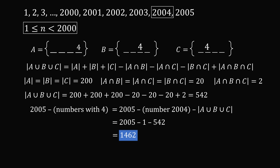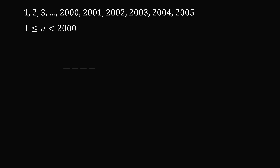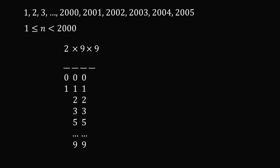Now that we've solved the problem the long way, the shortcut solution will be more rewarding. Instead of counting numbers with the digit 4 and subtracting them, let's directly count the numbers without the digit 4 from 1 to 2005, considering first the numbers less than 2000. We have a 4-digit number: in the thousands spot, 2 possibilities (0 or 1); in the hundreds, tens, and ones spots, 9 choices each (any digit except 4). So we have 2 × 9 × 9 × 9 = 1458.